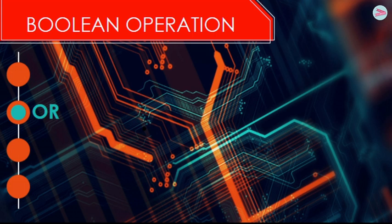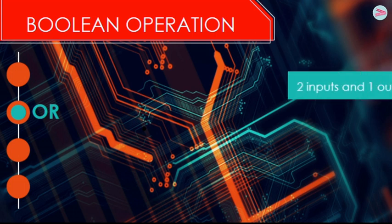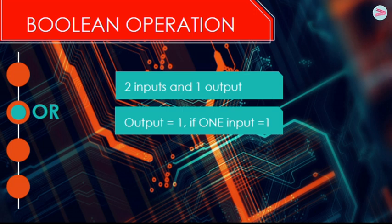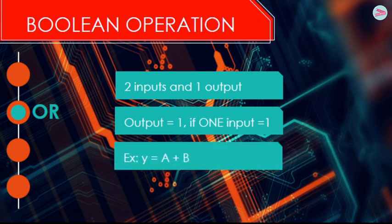The second Boolean operation is OR. OR has two inputs and one output. The output of OR will be equal to one if one of the input is one. For example, Y equal to A or B where OR is represented by plus sign.